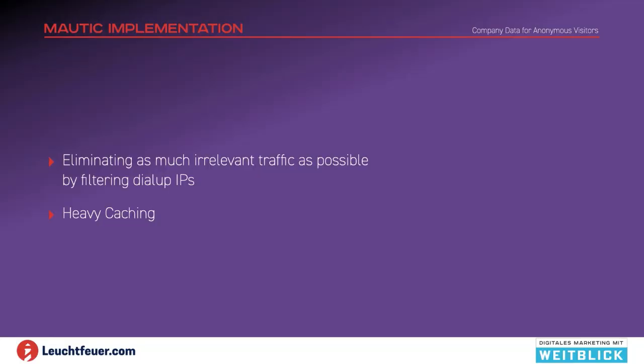The actual implementation in Maudic does require some brainpower. For instance, what we don't want to look at at all is all the B2C traffic and dial-up traffic — that is not going to end up in relevant company data by definition. So we want to identify those upfront and filter them out before we even touch any external API. The other thing we do is heavy caching. Why would we look up things time and again? We have an intelligent caching framework that helps us recognize data we already looked up or data that does not exist in the external service.